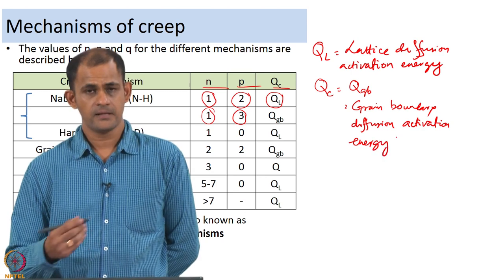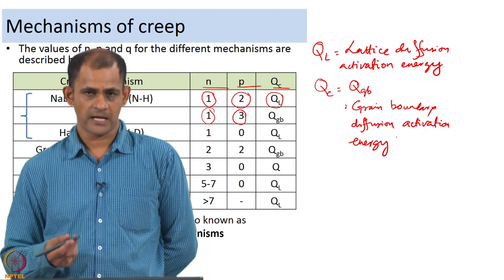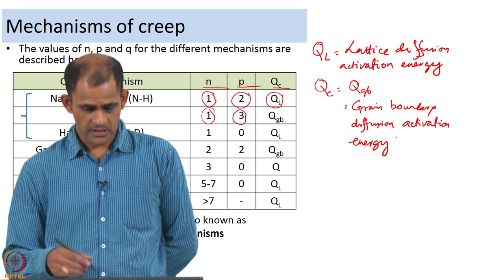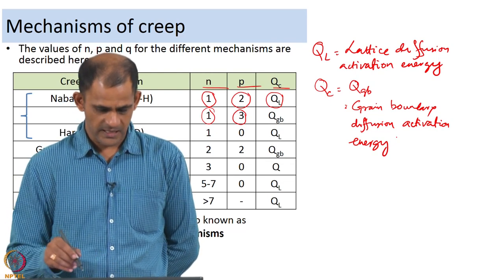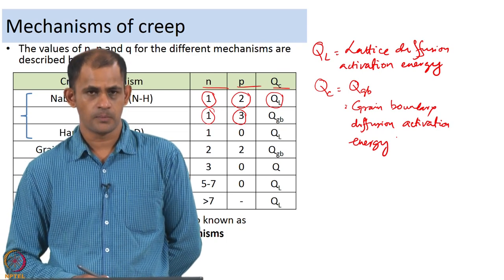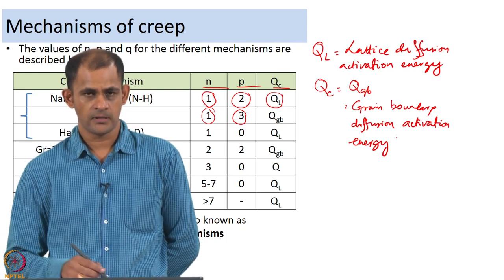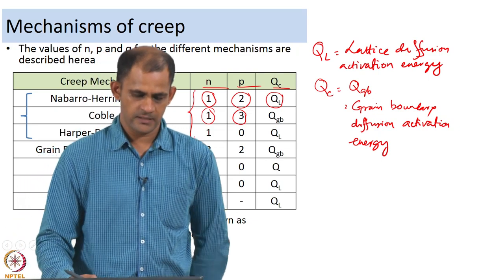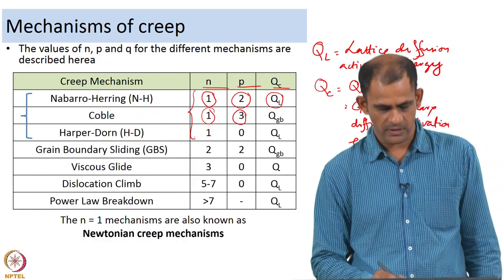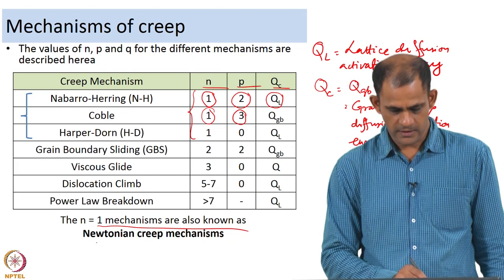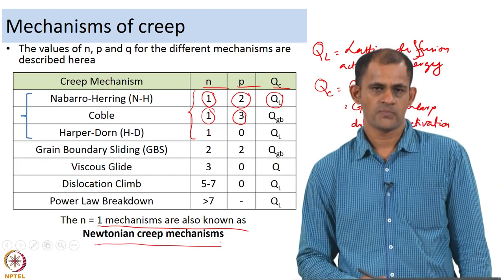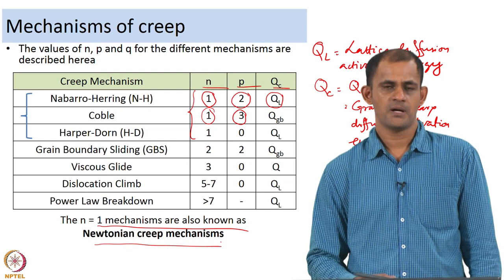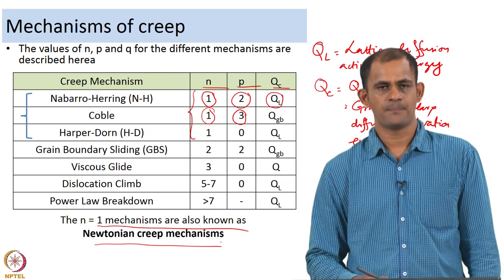As you go from one mechanism to another these values keep changing. Among the listed mechanisms, Nabarro-Herring, Coble, and Harper-Dawn all bear a value of N equal to 1, and these N=1 mechanisms are known as Newtonian creep mechanisms.